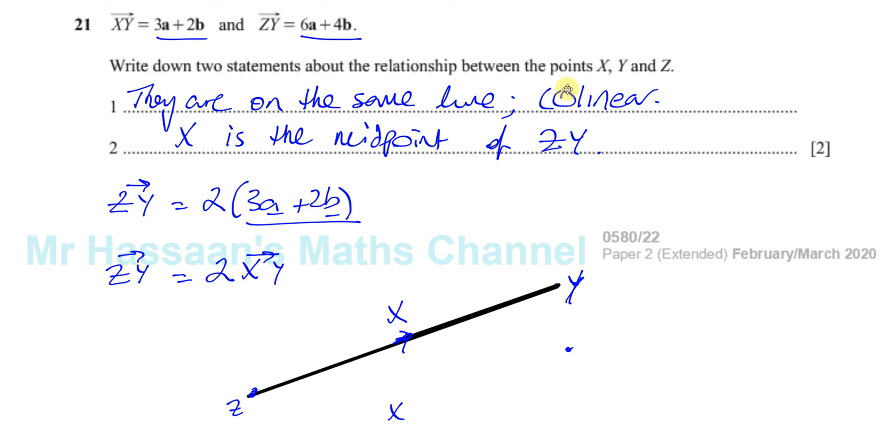And so that's basically the two statements that I think they're looking for here. You're relating the points to each other. So they're on the same line, and X is the midpoint of Z, Y. And there's the end of question number 21, which is about vectors.